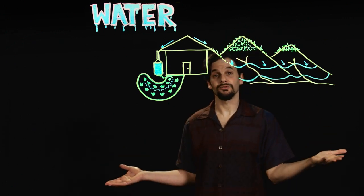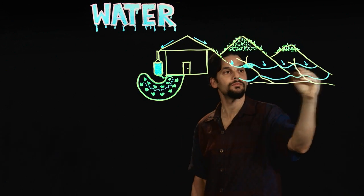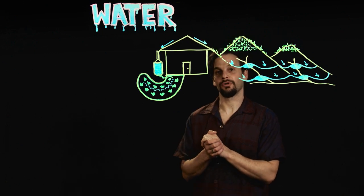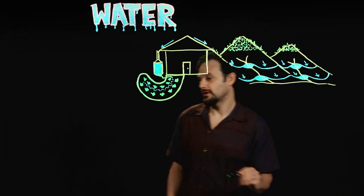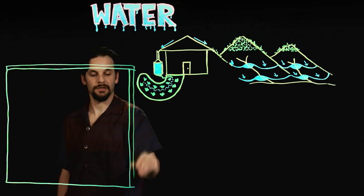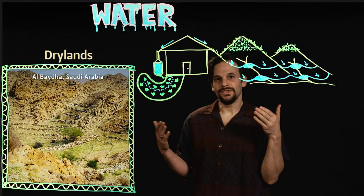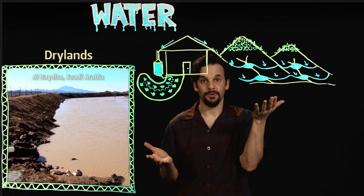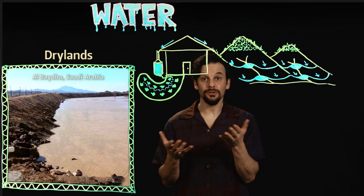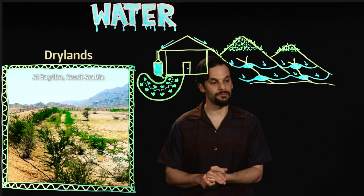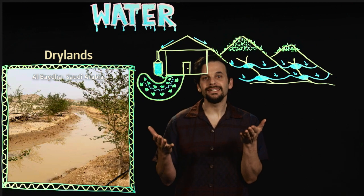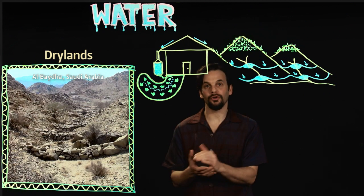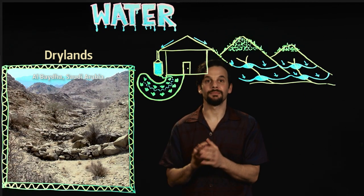Or we can direct it into ponds or reservoirs. This is what we can see on a large scale at the Al-Beda project in Saudi Arabia — I'll show you some photos of that. When we soak water high up in the watershed, it still moves down, but percolates underground through the soil, slowly replenishing water tables and feeding streams down below. Slowly sinking and spreading the water so it has more surface area contact with the earth will allow time for soils to become deeply saturated.